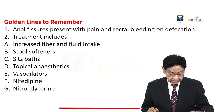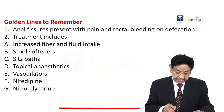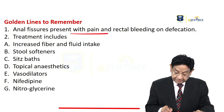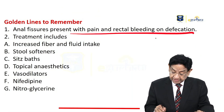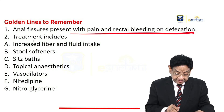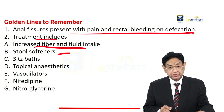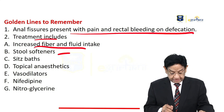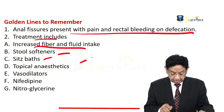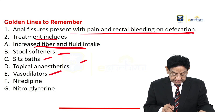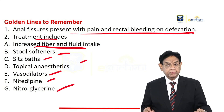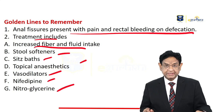Golden line to remember: anal fissure presents with pain, rectal bleeding, and identification on examination. Treatment includes high fiber diet, stool softener, sitz bath, topical anesthesia, and vasodilators — nifedipine and nitroglycerin.